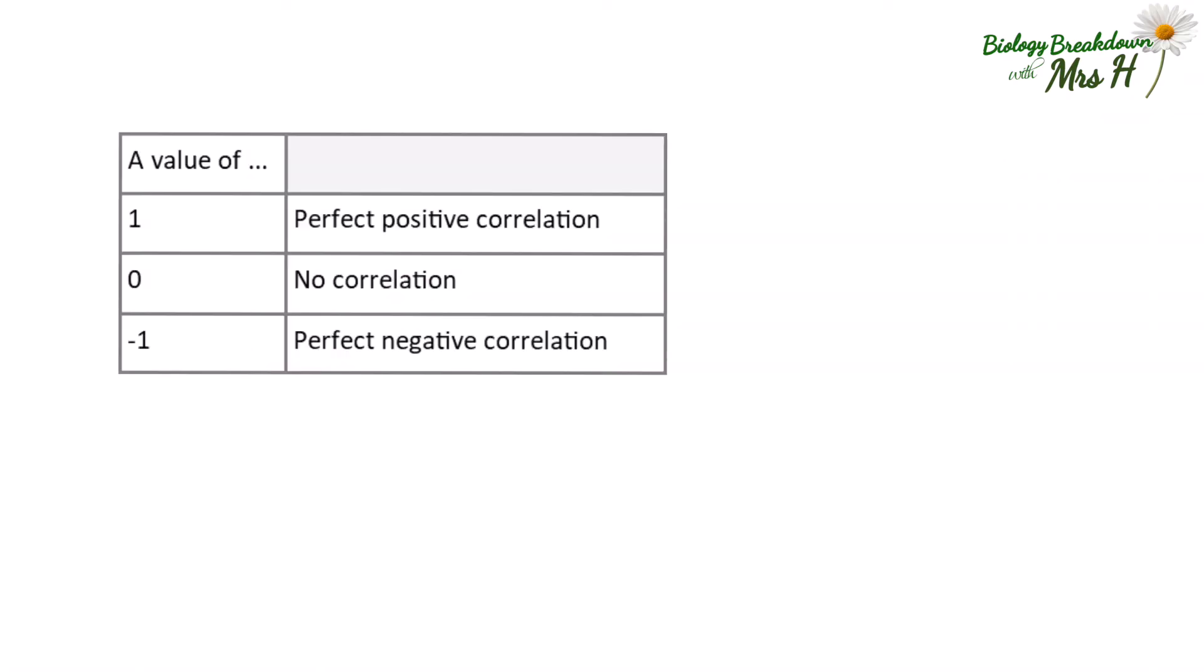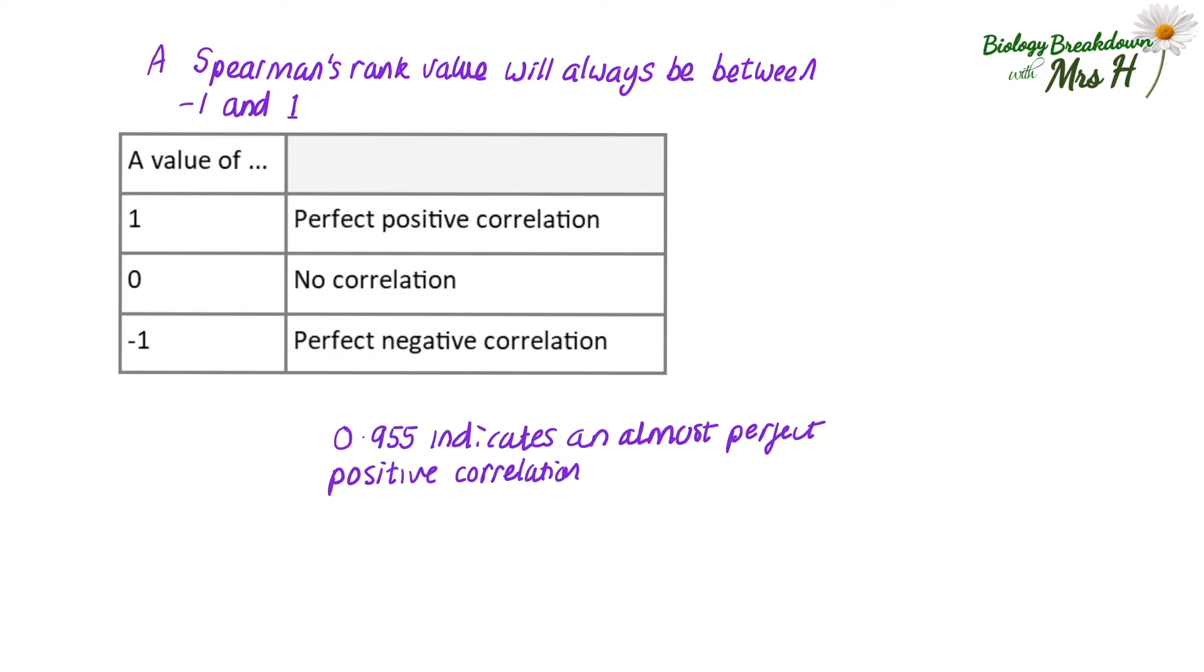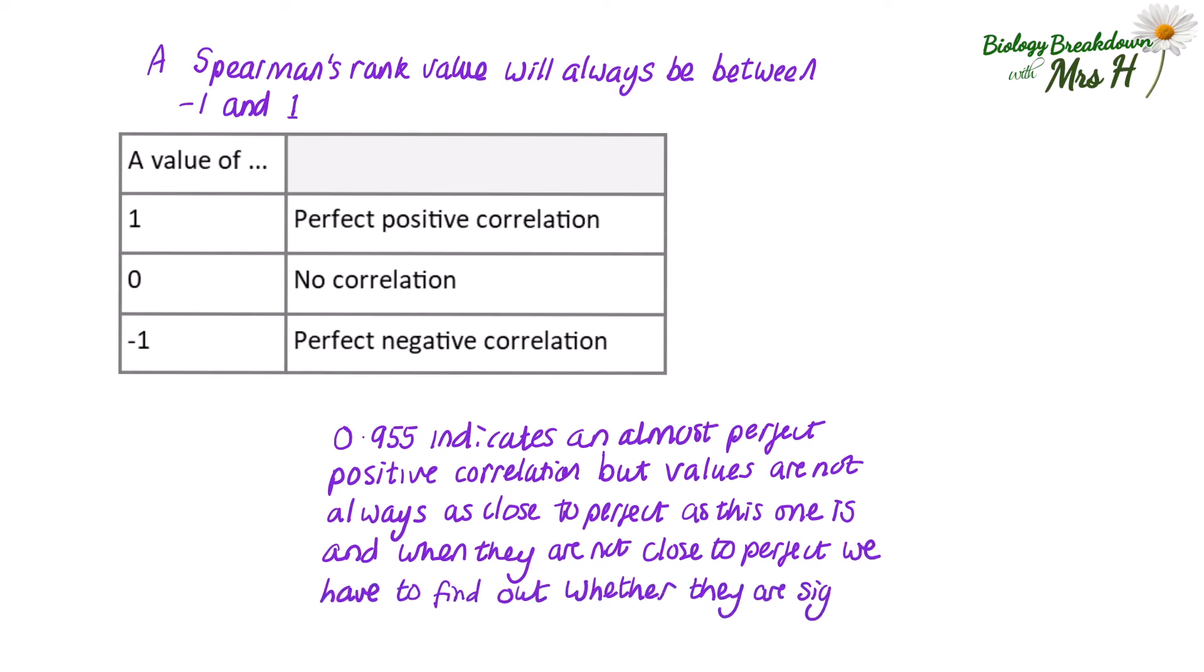What does 0.955 tell us? A Spearman's rank value will always be between minus 1 and 1. Minus 1 would be a perfect negative correlation, meaning as one variable increases, the other one decreases. A plus 1 will be a positive correlation, meaning as one variable increases, so does the other. So 0.955 indicates an almost perfect positive correlation, but values are not always as close to perfect as this one is, and when they are not close to perfect, we have to find out whether they are significant or not.